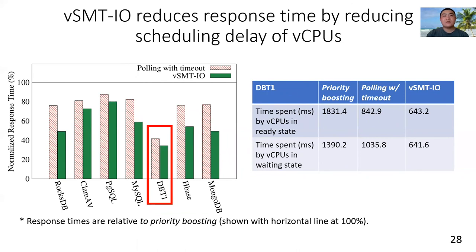To understand how vSMTIO reduces response times, let's analyze the time spent by VCPUs in different states during the execution of DBT1. We choose DBT1 because vSMTIO can reduce DBT1's response times by the largest percentage over priority boosting.